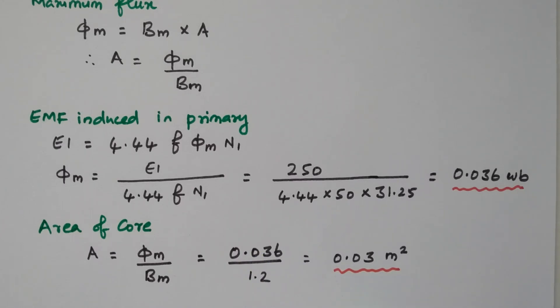So we have now calculated the number of turns in the primary N1, the number of turns in the secondary N2, as well as the area of the core. Now we will go to the second problem.